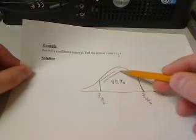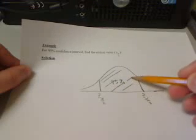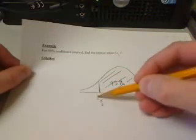So all of this data in here accounts for 95%. That means, since the whole distribution has to sum to 100%, from negative infinity all the way out to positive infinity on the number line,